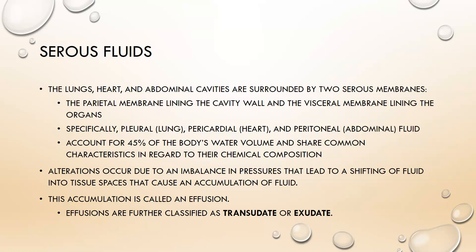The visceral peritoneum lines your stomach, small intestine, large intestine, liver — all of those things. The fluid located between the parietal and visceral membranes is there to limit friction between the membranes, because there's motion in a lot of these organs. Your heart is beating, your lungs are inhaling and exhaling air, and in the abdominal cavity there's constant movement of fluids and food being pushed through.